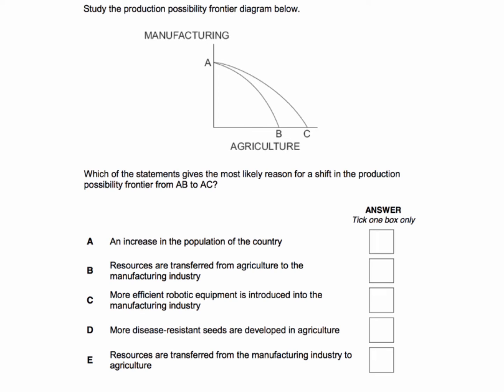One technique is to go through the answers line by line and work out whether each is right or wrong. Answer A: an increase in the population of the country — that's wrong, because an increase in the total size of the population would increase the resources available to both manufacturing and agriculture, and would cause the PPF to shift out for both products.